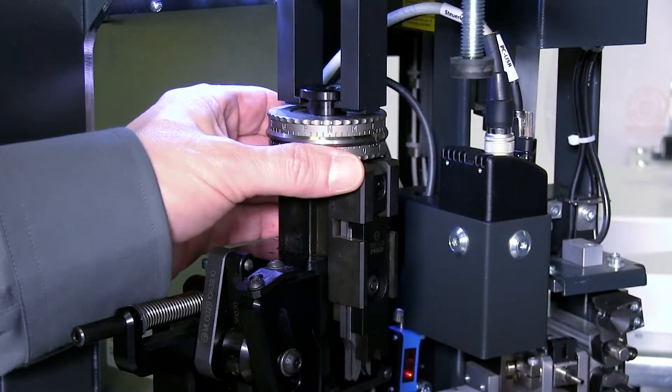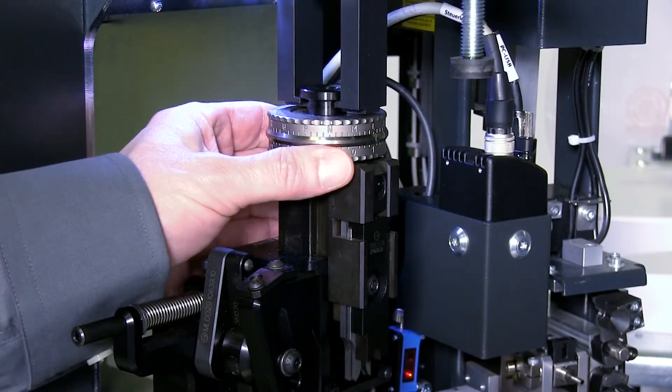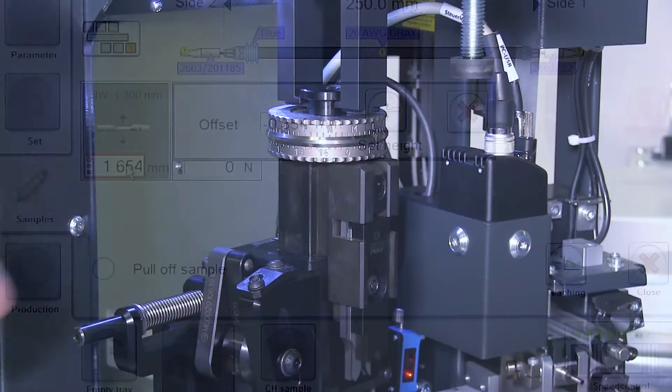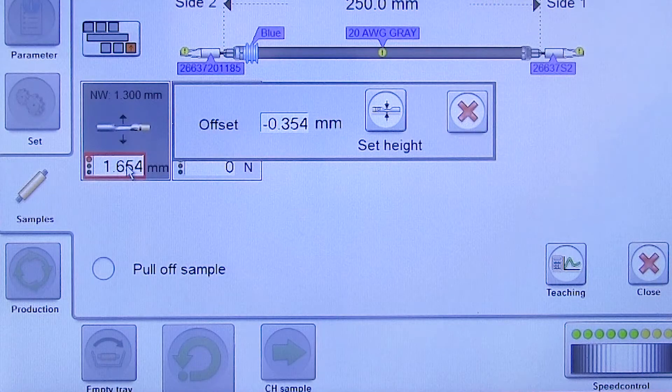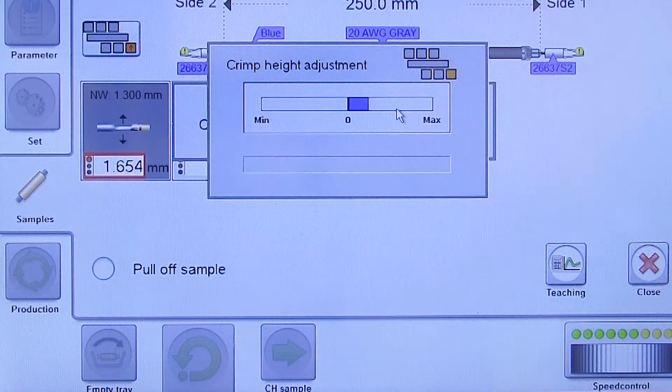If needed, the crimp height adjustment on the Unicrimp 221 is a manual adjustment made directly on the applicator, whereas on the Unicrimp 222, crimp height is electronically adjustable via the EZ software.